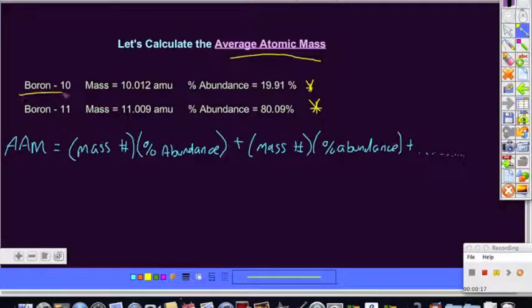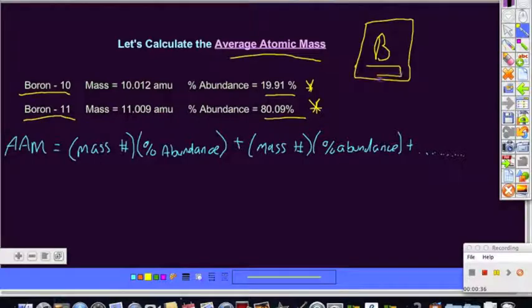So for boron 10, this isotope occurs 19.91% of the time. Out of all the boron isotopes, boron 11 occurs 80.09% of the time. So doesn't it make sense that the atomic mass on the periodic chart, the mass number that represents the element boron, should be closer to the value of the mass of 11? Because over 80% of all boron atoms have that mass.